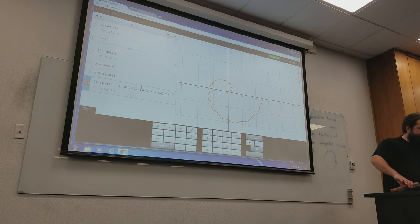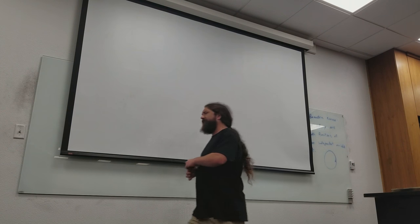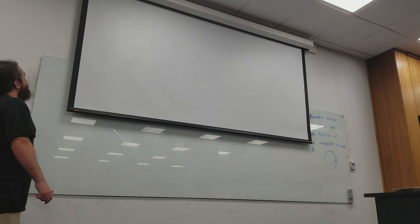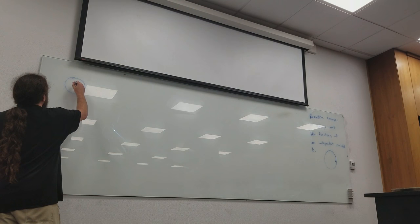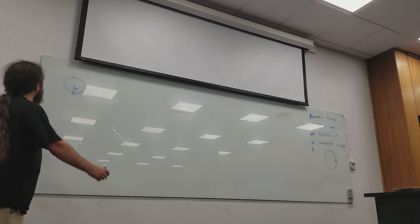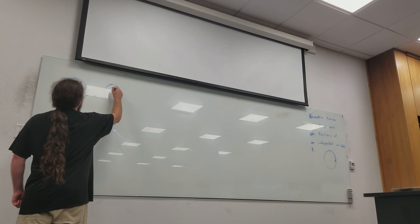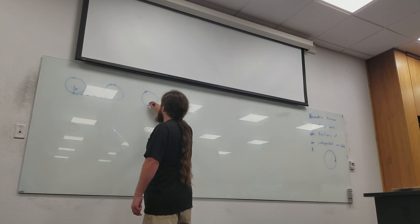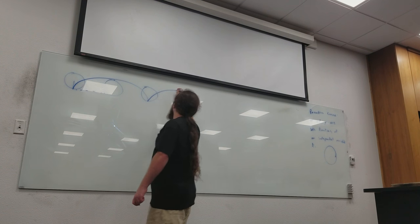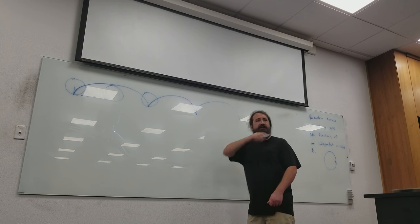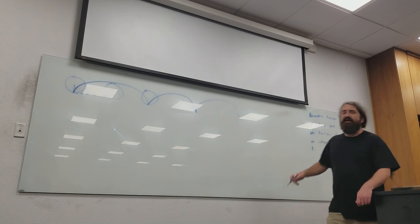One of the other curves you run into is a cycloid. Anybody know what a cycloid is? It's basically: if you've got a nail in your tire, it's the path followed by that nail as you roll it. If you've got a tire of radius R with a nail in it, as you roll it you'll have the nail go up, then down — so the nail takes this arching kind of path. That's what a cycloid is, and let's see if we can figure out how to parameterize it.